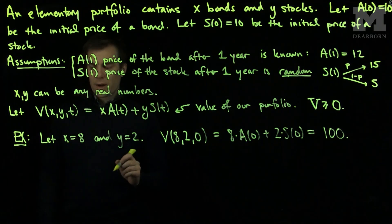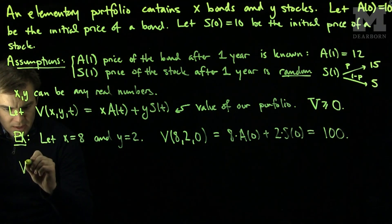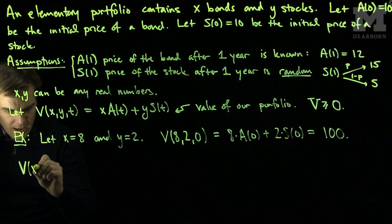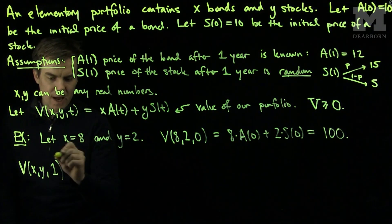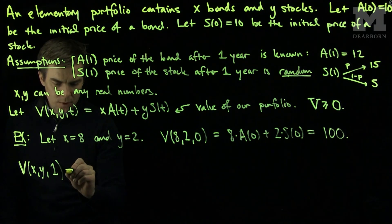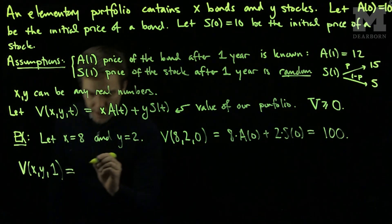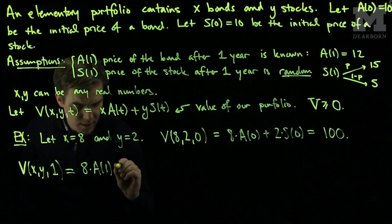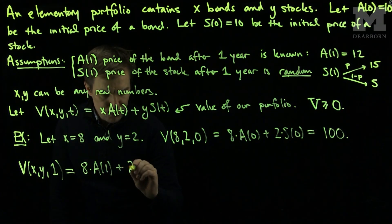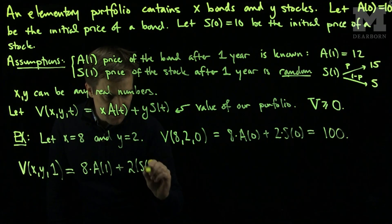Now let's consider my portfolio at time 1. V(X,Y,1), in the case when X is 8 and Y is 2, will be 8 times A(1) plus 2 times S(1).